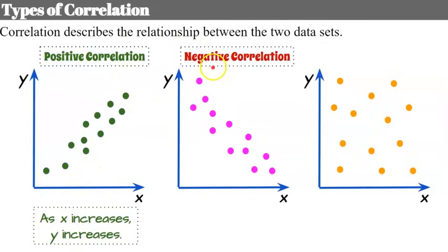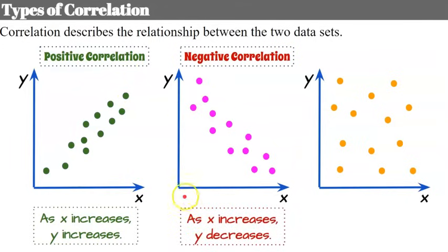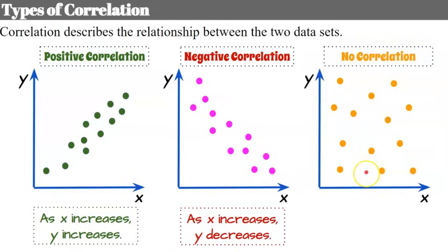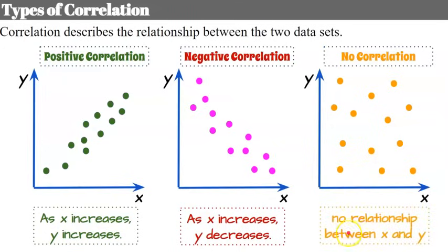The second type is a negative correlation — as X is increasing, the Y coordinate is decreasing. You can also make a connection that if you drew a trend line, this trend line would have a positive slope and this one would have a negative slope. Our third type is no correlation — the points are truly just scattered throughout the graph with no pattern, no relationship between X and Y.